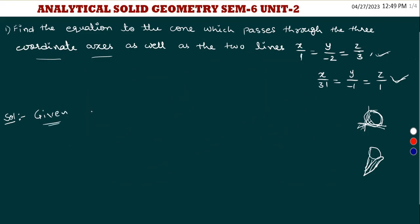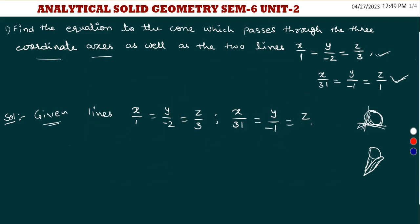Given 2 lines: the first line is x/1 = y/(-2) = z/3, and the second line is x/3 = y/1 = z/1.